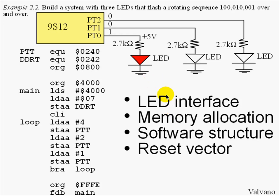In summary, we saw that the LED interface consisted of a resistor in series with the output of the microcontroller. The memory allocation was used to specify which objects go into RAM — in this case we have nothing to put into RAM so we left it blank. The information after ORG 4000 places our program into ROM, and we use ORG FFFE to specify where to begin executing when the power is turned on, which in this case begins at main.